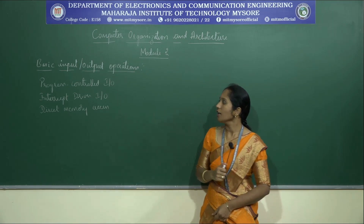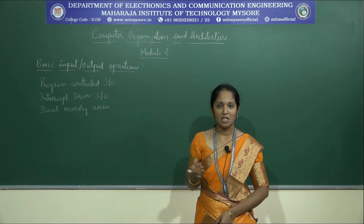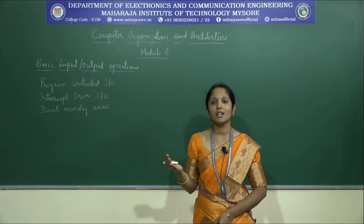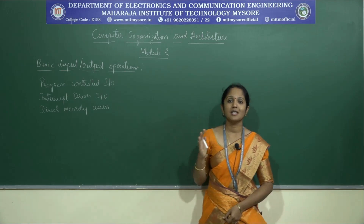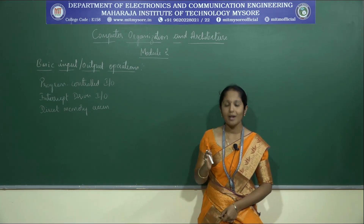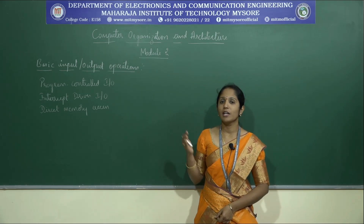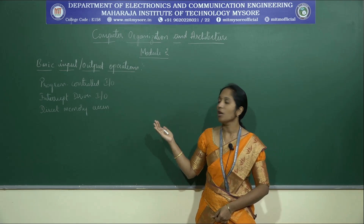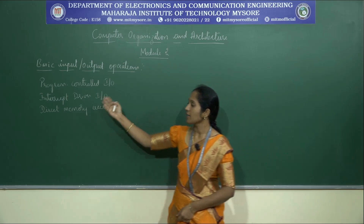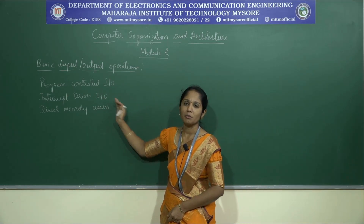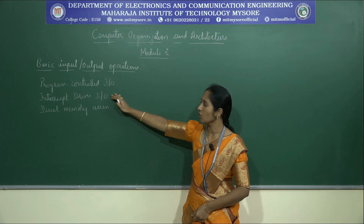In program controlled IO, you will have a program with certain instructions — one part accepts the input and another part gives the output to the output device. In interrupt driven IO, the processor issues a command to perform the I/O operation and continues executing the next instruction. Once the I/O operations are over, the I/O devices give an interrupt; the processor halts execution and accepts the I/O from the devices.